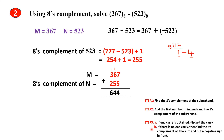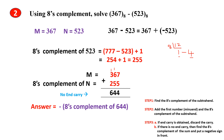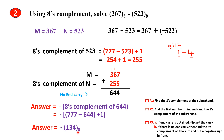As per Step 3, here we don't have any end carry. Since there is no end carry, we apply Step 3b: find the 8's Complement of the sum and put a negative sign in front. The sum is 644. The 8's Complement of 644 is found by computing the 7's Complement of 644 plus 1. This gives the answer minus 134.